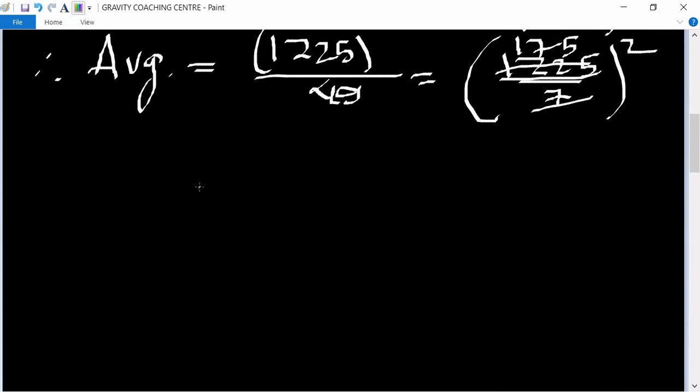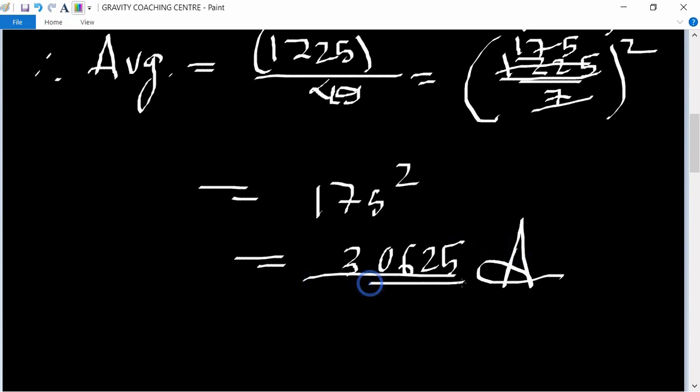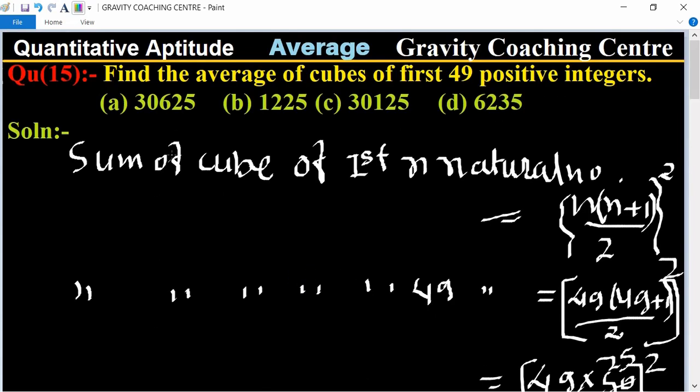175 squared equals 30625, which is the required answer. So option A is the correct answer.